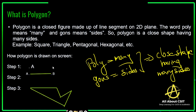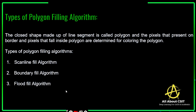How do you draw a polygon on the screen? First, select a pixel, then select another pixel and join them. In that way, select multiple pixels and join them. If you make it a closed shape, you call it a polygon. The pixels present on the border and the pixels that fall inside the polygon are determined for coloring the polygon.